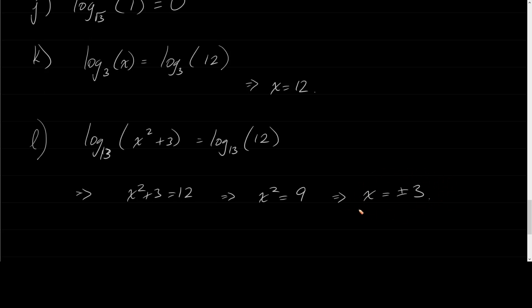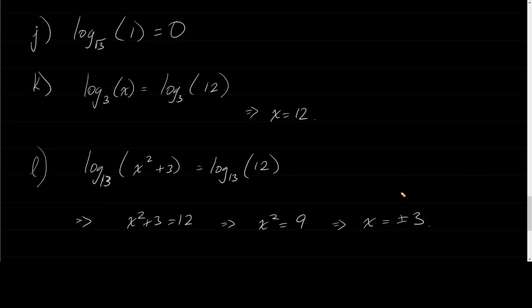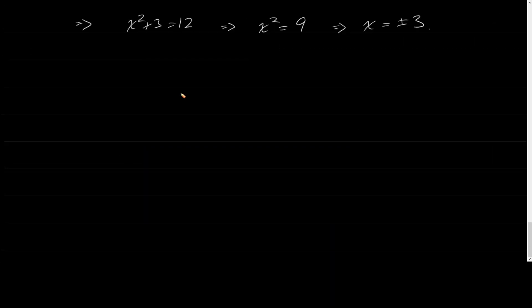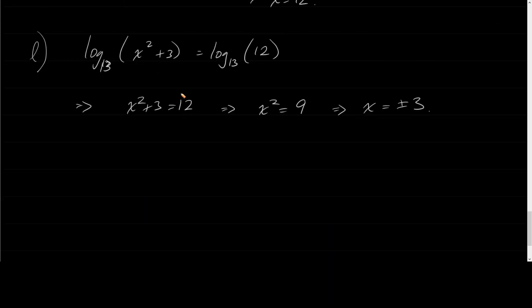At the very beginning of this lecture I said the input had to be positive — the domain requires x greater than zero — but we're talking about the entire argument inside the parentheses being greater than zero. If you look at this problem, if I plug in negative 3, negative 3 squared is positive 9, and 9 plus 3 is 12. So this entire thing ends up being positive, so it's okay to have that negative 3.